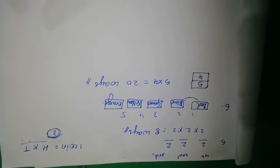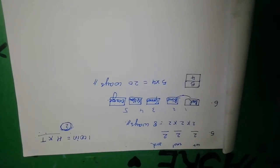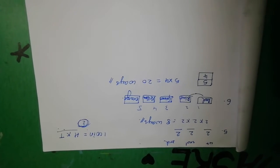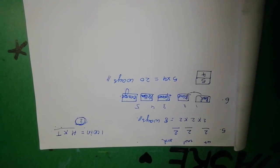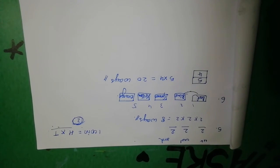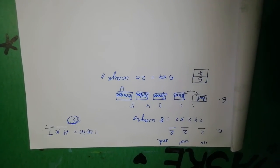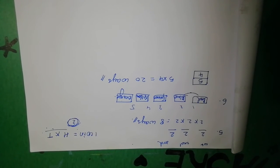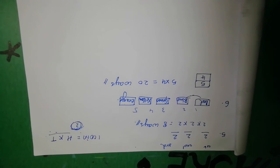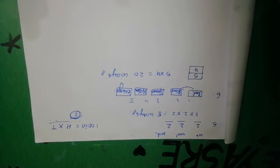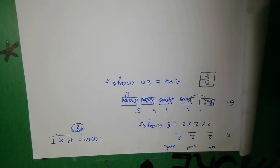We have completed Exercise 7.1. In the next video we will see Exercise 7.2 — it is also very easy, and we are going to use the factorial symbol. If you like this video, please subscribe to our channel, click the bell icon, like this video, and share with your friends. Thank you, bye bye.